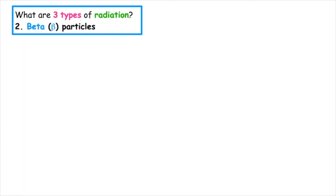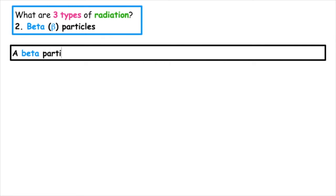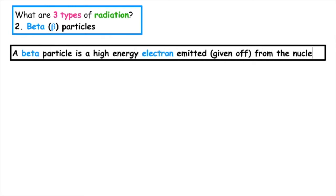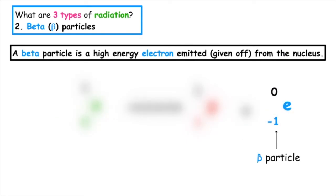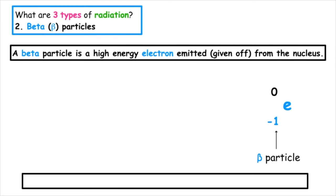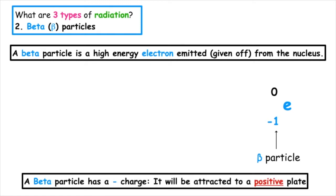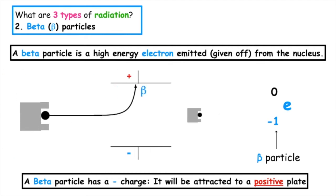The second type of radiation is beta. A beta particle is a high-energy electron which is given off from the nucleus. One neutron can split up into a proton and an electron — the electron is the beta particle. A beta particle has a negative charge and because of this it will be attracted to the positive plate when passed through an electric field.